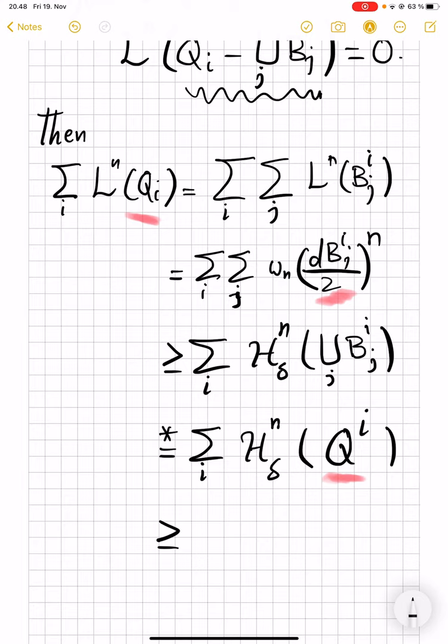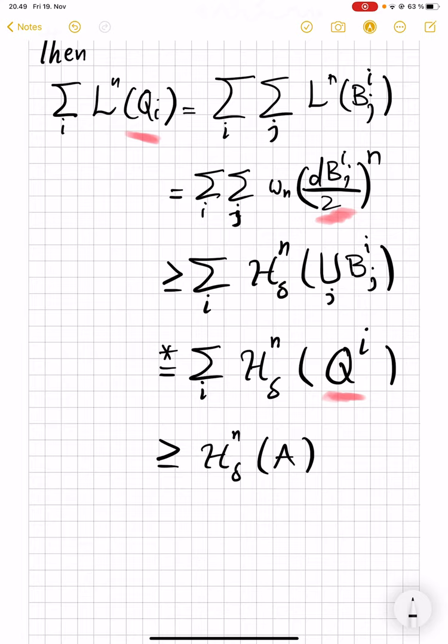And that almost finishes everything, because this is, by subadditivity, bigger than H^n_δ of A. Because union of Q_i's is a covering of A. It's bigger than A. So here we're not seeing it as a covering. Just union of Q_i is a superset of A.